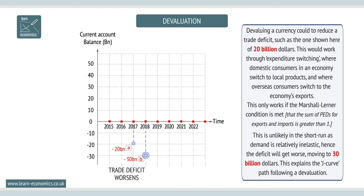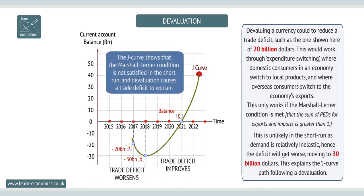This explains the J-curve path following a devaluation, indicating the Marshall-Lerner condition is not met in the short run, and devaluation causes any trade deficit to worsen.